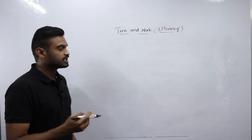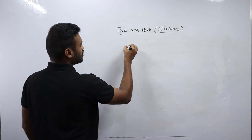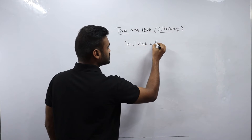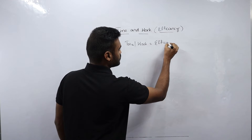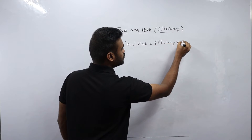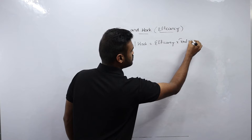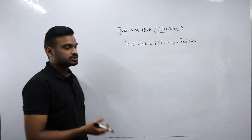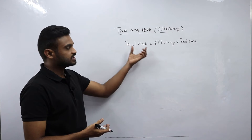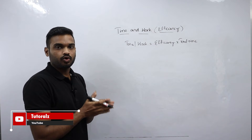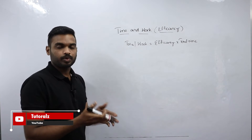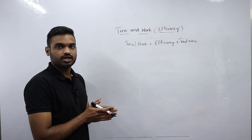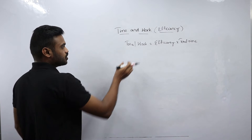I am considering the same definition for all tutorials in time and work: total work equals efficiency of a person into total time taken by the person to complete the work. This is the basic definition, and by deriving formulas and methods using it consistently, you will understand very quickly how to do the problems.